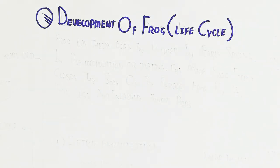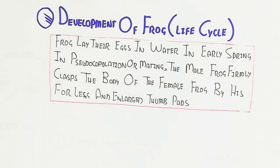The frog lays their eggs in water in early spring in pseudo-copulation or mating. The male frog firmly clasps the body of the female frog with his four legs and enlarged thumb pads.